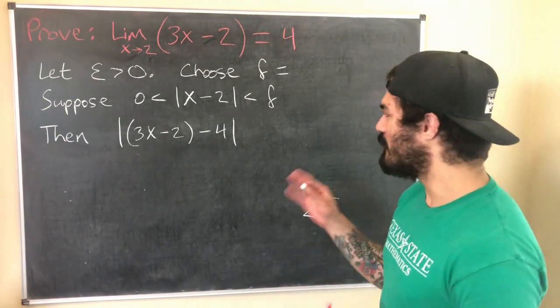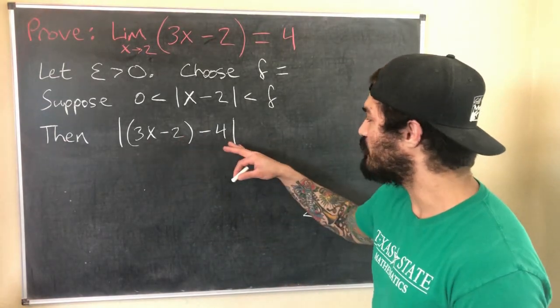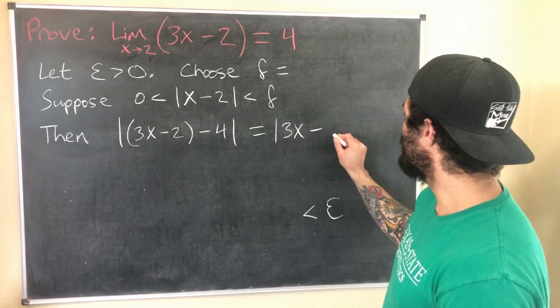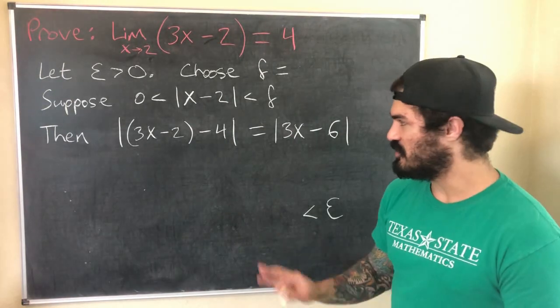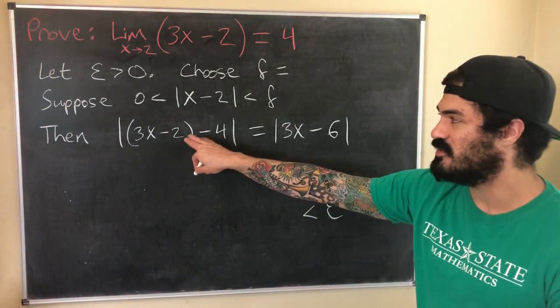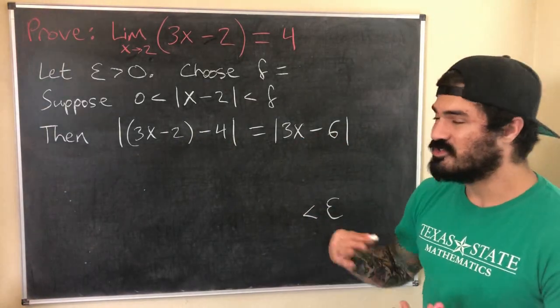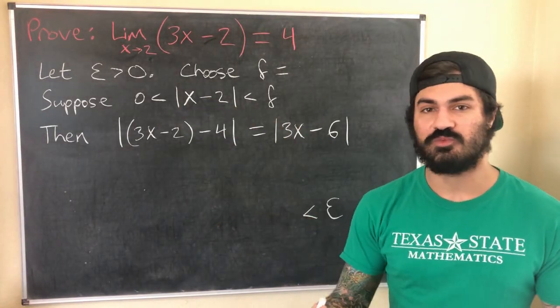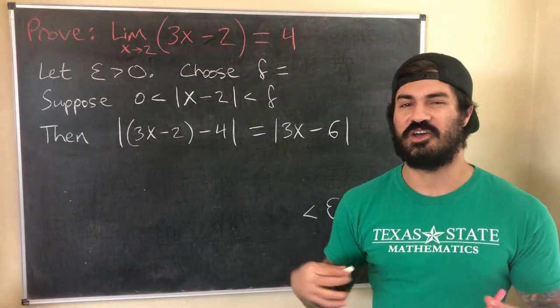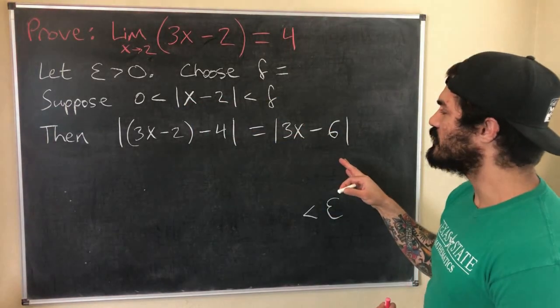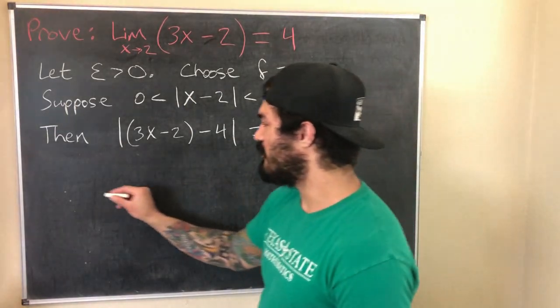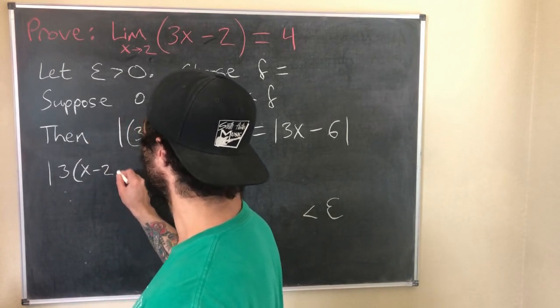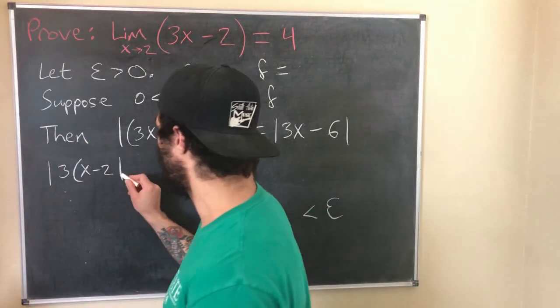Let's see how we continue from here. We can simplify this: this equals 3x minus 6. Okay, and again we're not using any assumptions yet, we're just using basic algebra. We combine these two like terms: 3x minus 6. Now typically what we want to do is we want to somehow factor out this absolute value of x minus 2 expression, because this is what we can control the size of. We can make this as small as we want. So we can factor out a 3 from here and I'll keep it in the absolute value for now. We can factor out a 3 and we're left with x minus 2.